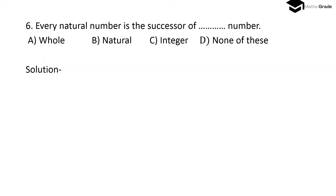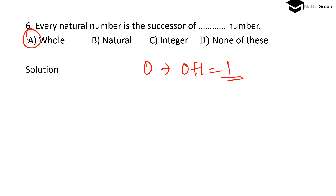Question number 6: Every natural number is the successor of which number? Every natural number is the successor of a whole number. The successor of 0 is 0 + 1 = 1, and 1 is a natural number as well as a whole number. So every natural number is the successor of a whole number, specifically starting from 0.